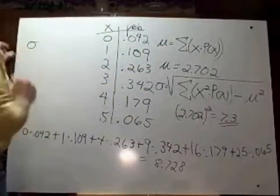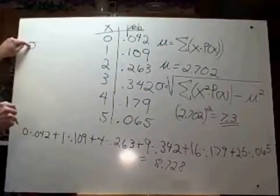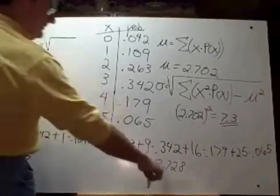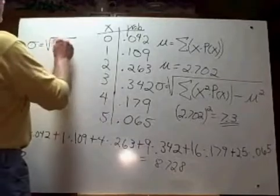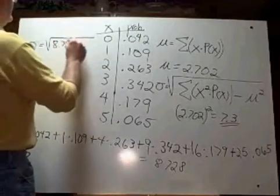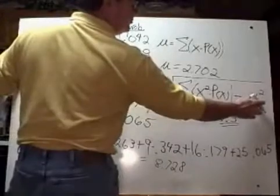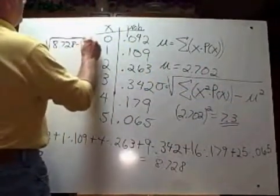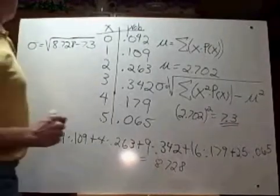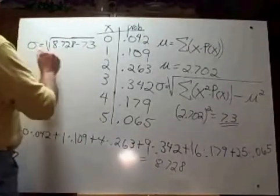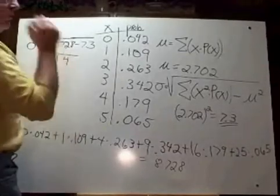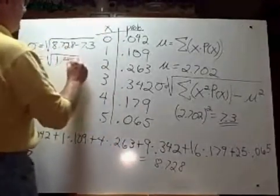So we've got the standard deviation, sigma, is now, we know, is equal to 8.728 minus mu squared, which, we already said, is approximately 7.3. We should find that this is equal to the square root of 1.428.